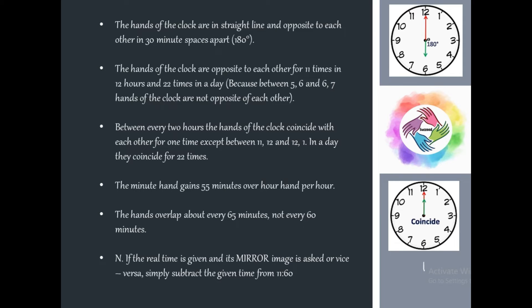If the real time is given and its mirror image is asked, or vice versa, we subtract the given time from 11:60. For example, if the mirror image shows 10-something, we subtract from 11:60. So 11:60 minus 10:10 gives 1:50, making 1:50 the mirror image.